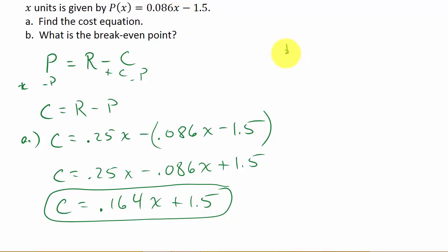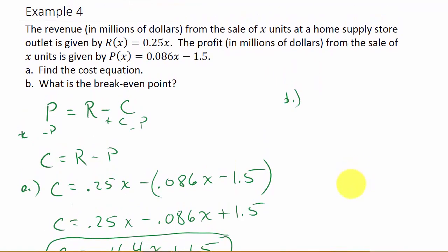Well, what about part b? What is the break-even point? Well, actually, in this problem, there's two ways that you can do it. I'm only going to work it one way, and I'll show you how to set up the other way. One way that you can do it is by setting the revenue equal to the cost. You can set the revenue function equal to the cost function, and then solve for x, because isn't that what break-even is? Your profit is zero.